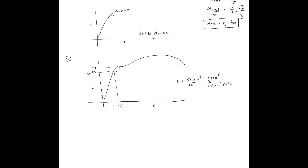For yield stress, point B must be above 50 kilo psi — let's say sigma_y equals 60 kilo psi, which you can read directly from the chart. If you're also looking for the ultimate tensile strength, that's point D, sigma_u, which must be more than 60 kilo psi — let's say 80 kilo psi. So sigma_u equals 80 kilo psi for this grade of steel.